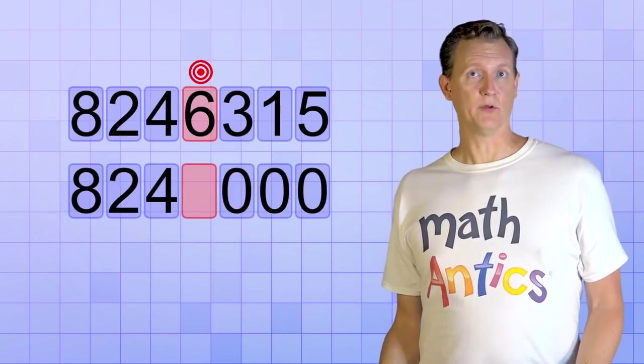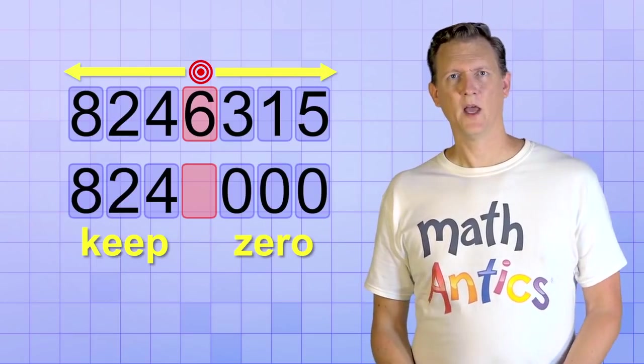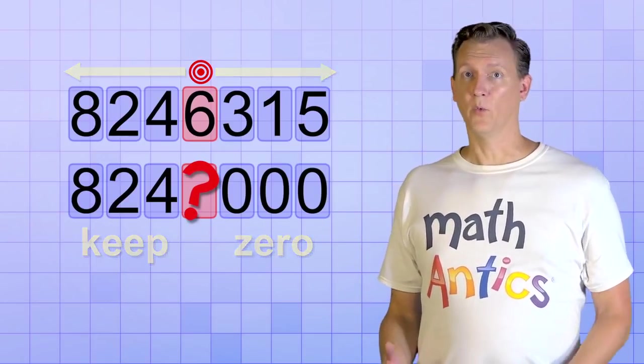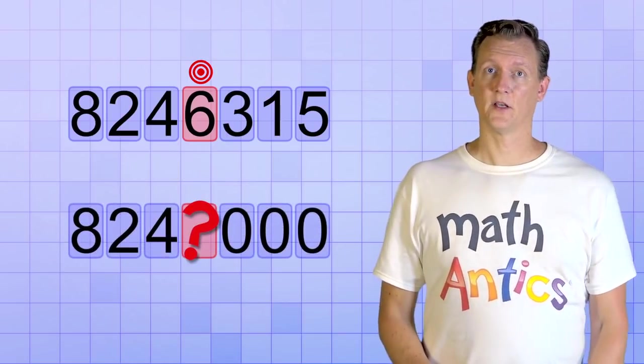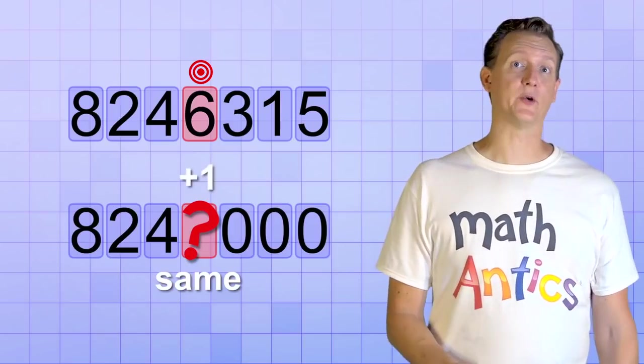So that seems pretty simple. All the bigger digits you keep, and all the smaller digits you zero. But what about that target digit itself? What do we do with that? Well, we're going to do one of two things. We're either going to keep that digit the same, or we're going to increase it by one.